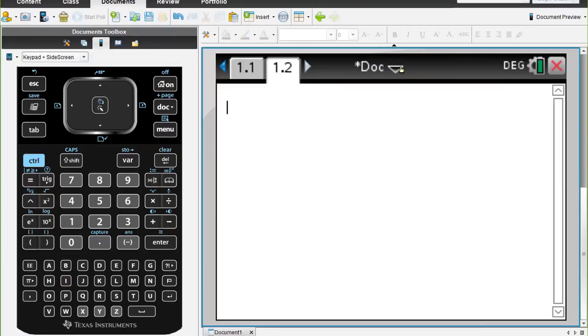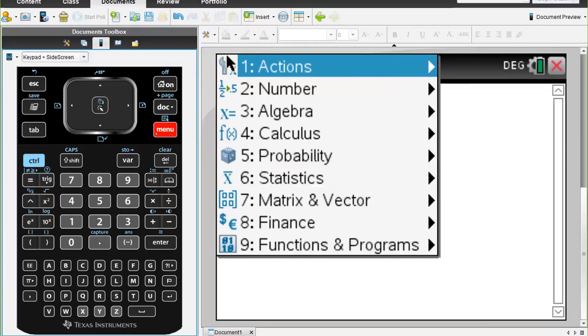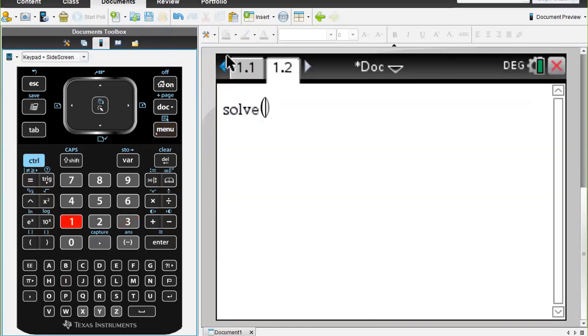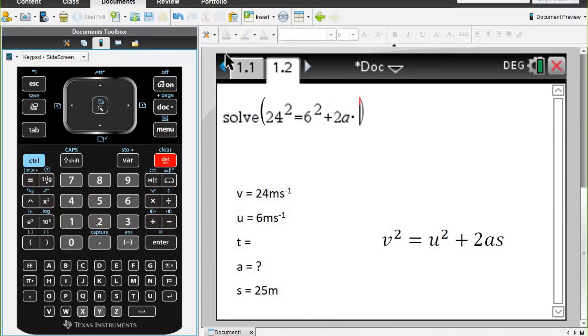So this time we're going to go menu 3 and 1 for solve, and we have 24² = 6² + 2 times the acceleration times 25, and we're going to solve for the acceleration. We get that this is 54/5.